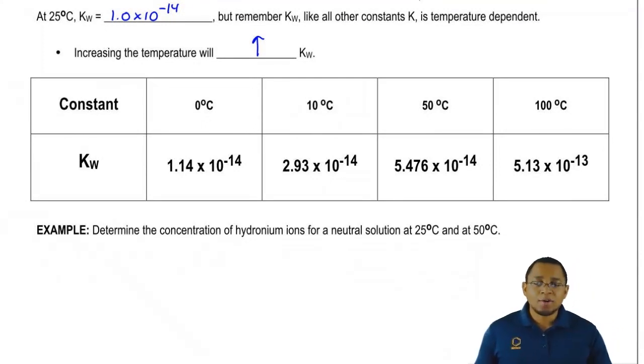Just realize on your exam when you need to use Kw, if they don't give you a temperature, just assume that it's 25 degrees Celsius. So then Kw would be 1.0 times 10 to the negative 14.